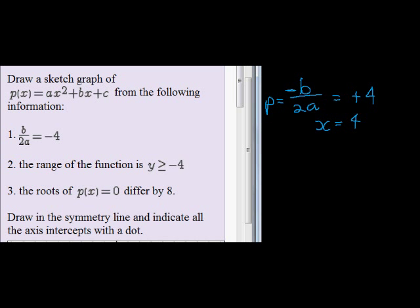The next thing they give us is the range of the function. Now what we need to remember is that a parabola or quadratic function can look like this or like that. In the smiling or valley shape, we have a lowest point in the valley, which means that y, the output, will always be bigger than or equal to that lowest point.